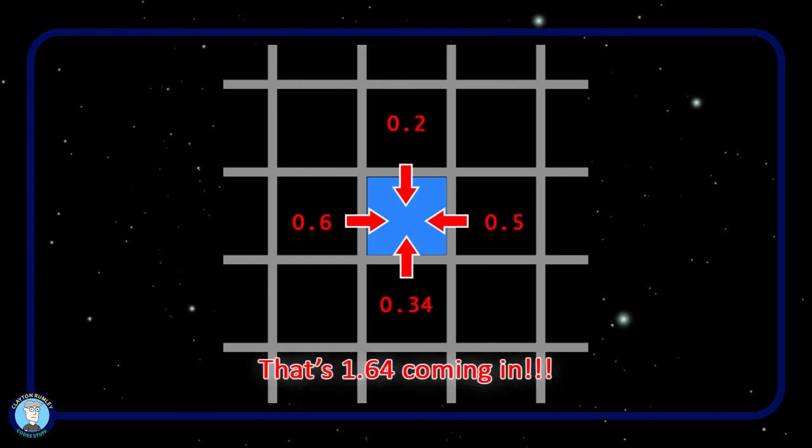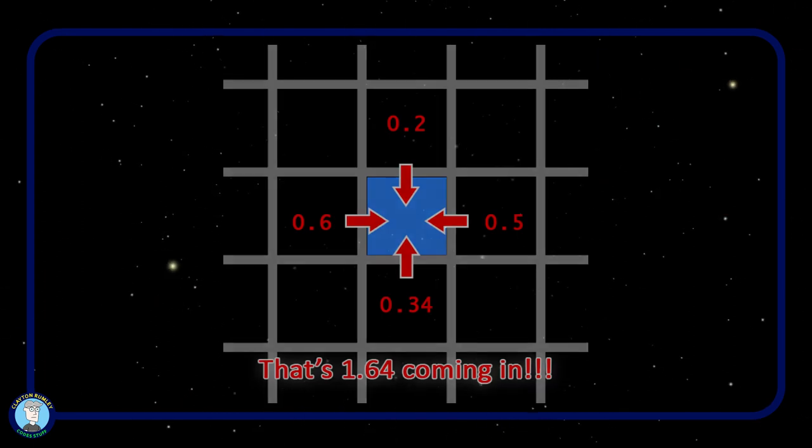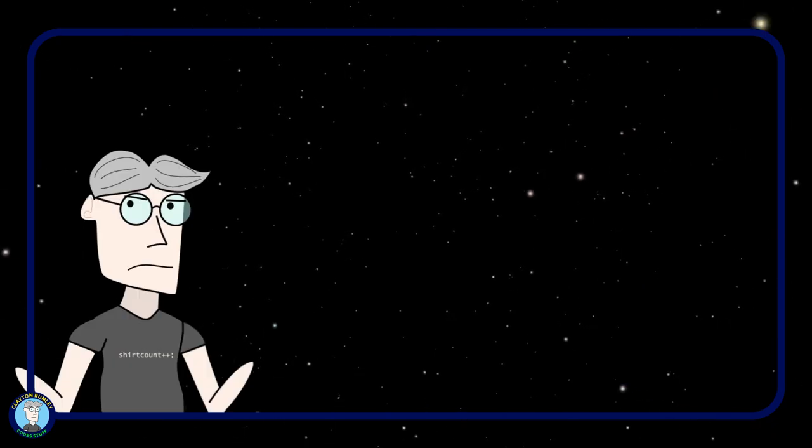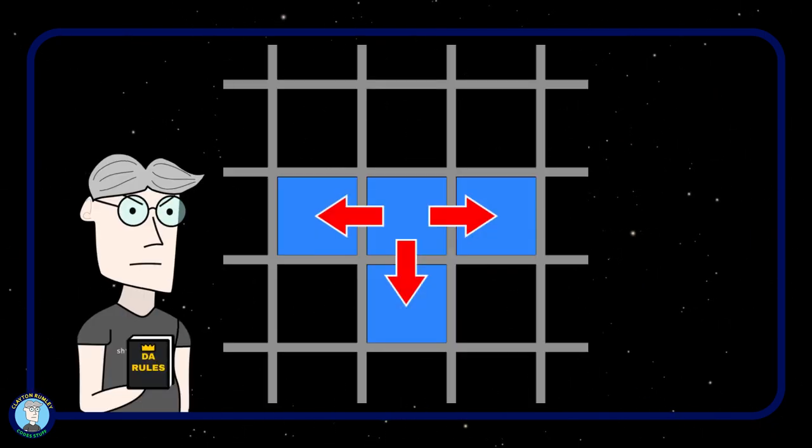But what happens if the sum of all the liquid transferring into a cell is greater than one? Well, in real fluid simulations, fluid can't be compressed, and you'd use projection to prevent those situations. But in my case, I need it to be just good enough. So my rule is this. If the amount of water in a cell exceeds one, and it can't go down left or right, then it must force the water up to the cell above it. That will cause water to rise as more is added to it.